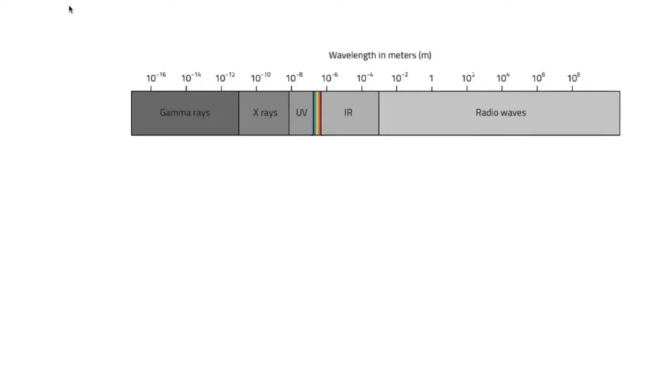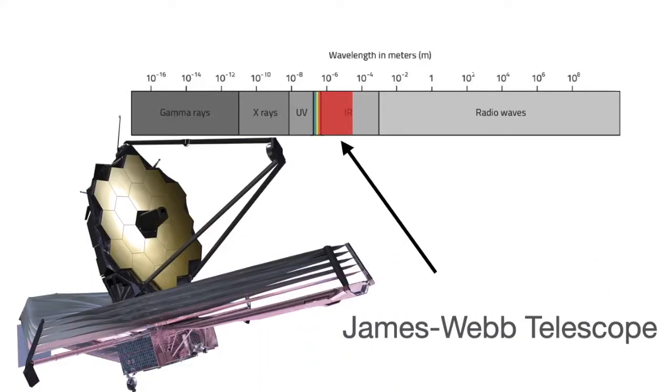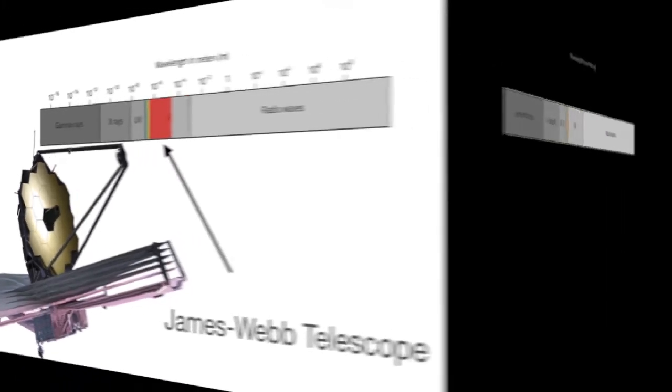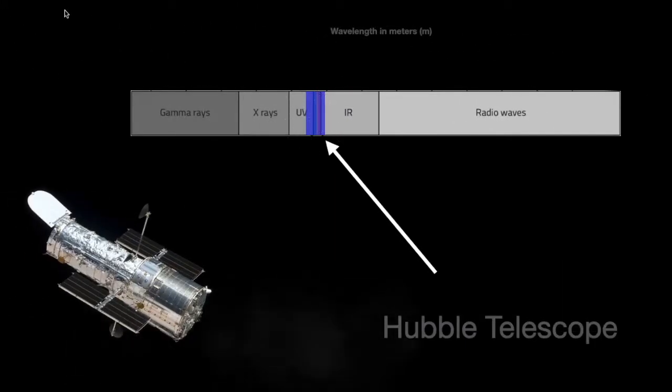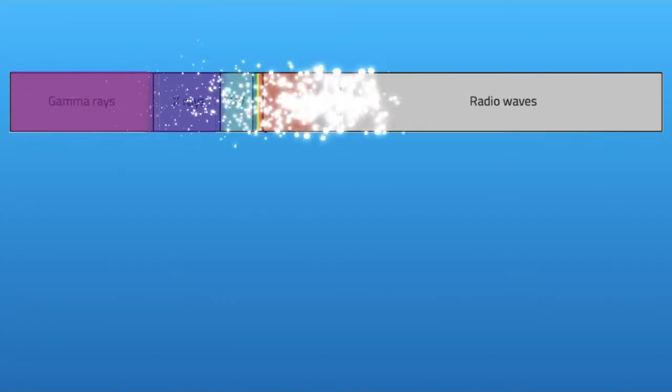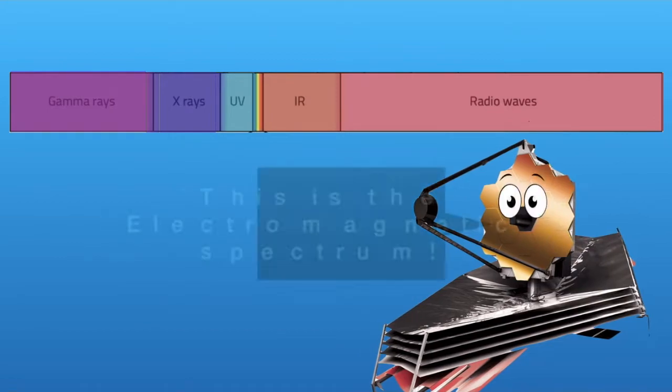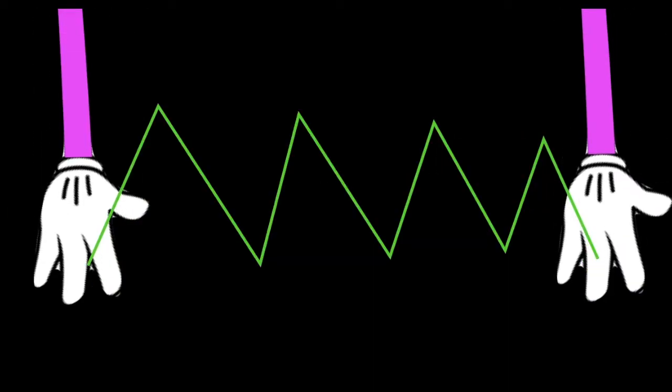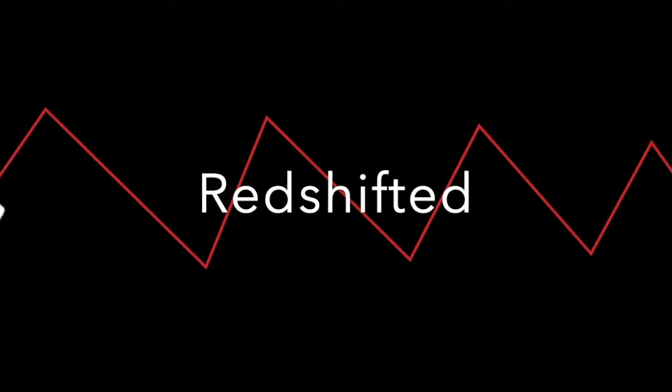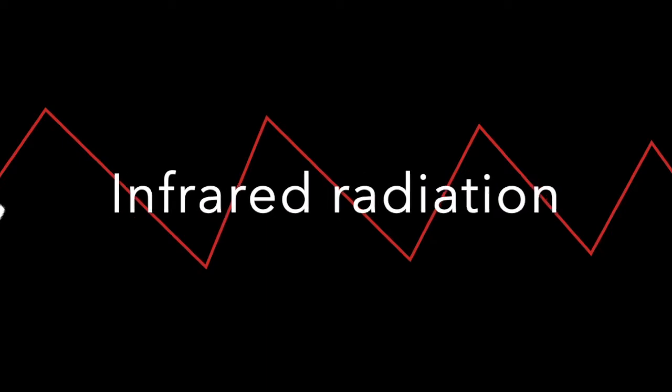Number 1. The James Webb Telescope focuses on the infrared portion of the electromagnetic spectrum, unlike the Hubble, which focused on the ultraviolet and visible portions of the spectrum. The electromagnetic spectrum shows all the different wavelengths of electromagnetic radiation. Electromagnetic rays that were emitted during the first 100 million years after the Big Bang are redshifted or expanded into infrared radiation over time.